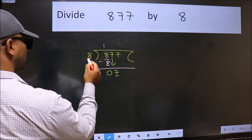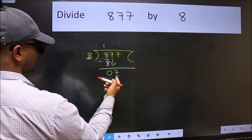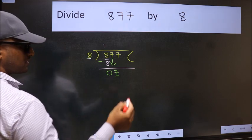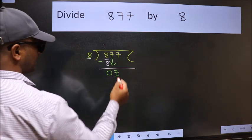Now here we have 7 and here 8. 7 is smaller than 8. So we should bring down the second number.